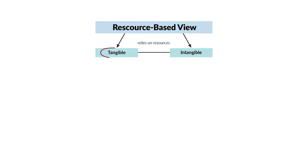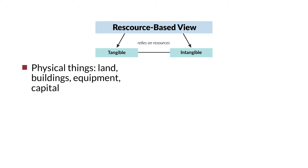Resources can be tangible or intangible. Let's more specifically define these terms, give some examples, and talk about why they are each important. Tangible resources refer to physical things that we can see and touch, like land, buildings, equipment, and capital. In a supply chain context, tangible resources might include a network of distribution centers or a fleet of trucks.